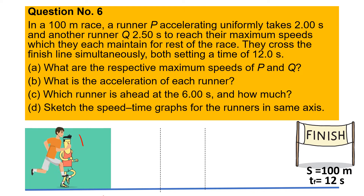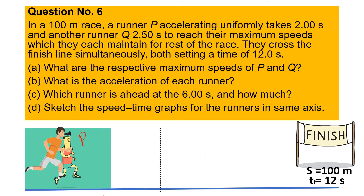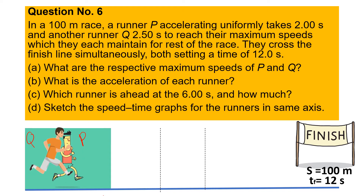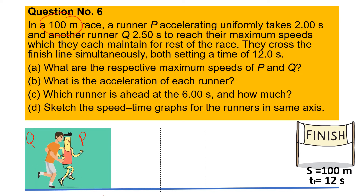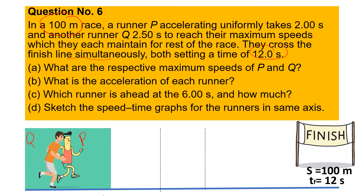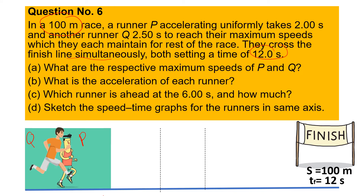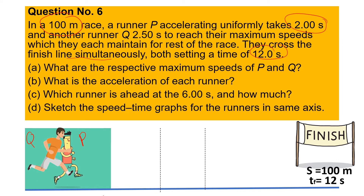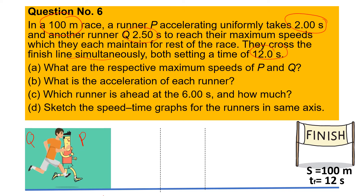Both setting a time of 12 seconds. So we have runner P and runner Q, both in a race of 100 meters. Both of them cross the finish line simultaneously at 12 seconds. Runner P accelerating uniformly takes 2 seconds, while runner Q takes 2.5 seconds before they maintain their speed for the rest of the race.